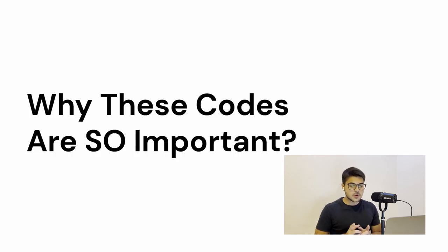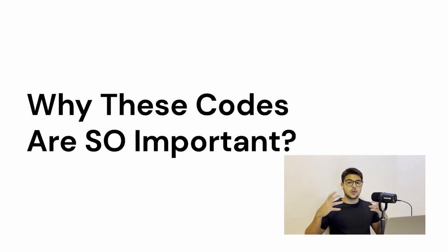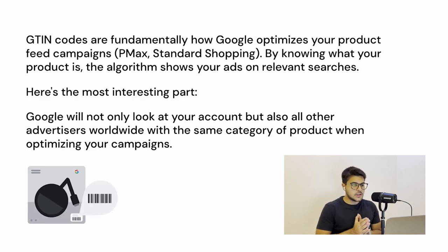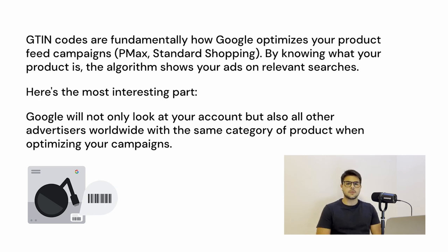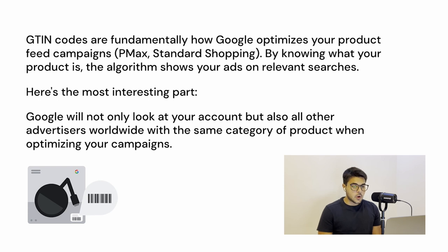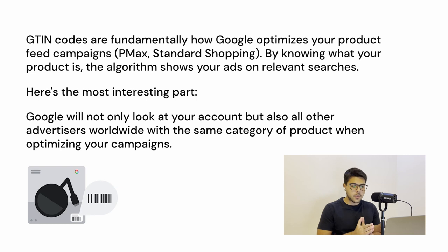Why are these codes so important, and why does that correlate with it being a global database? GTIN codes are fundamentally how Google optimizes your product feed campaigns — for example, your Performance Max campaigns, your Shopping campaigns, and your dynamic display remarketing campaigns. By knowing exactly what your product is in this global database, the algorithm shows your ads on relevant searches.